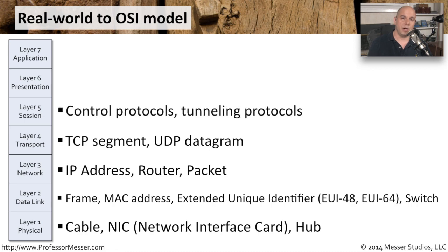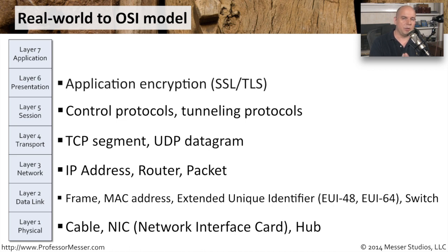Our session layer is where we might see control protocols used to set up or tear down a session. These are also protocols that might set up tunnels between one station and another. Layer 6, our presentation layer, is where encryption takes place — if we're going to a website and sending or receiving encrypted data that we need to decrypt, all of that process takes place at layer 6, getting the data ready to present to us.